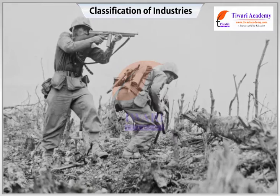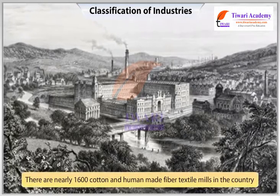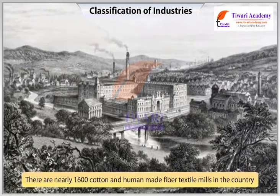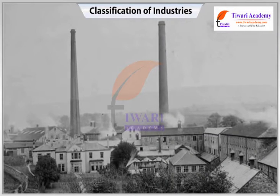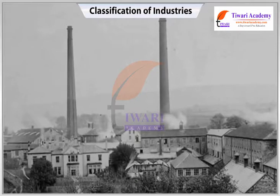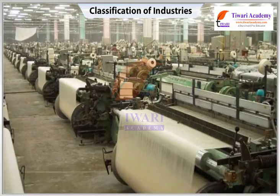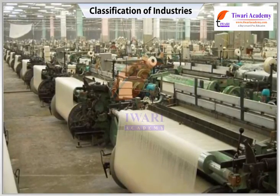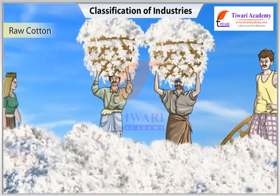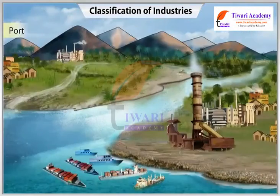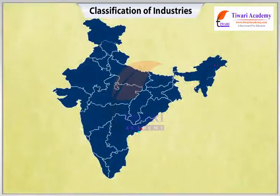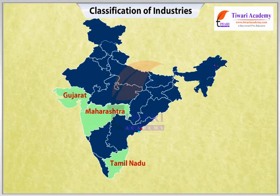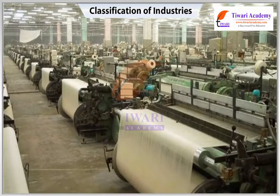Today there are nearly 1,600 cotton and human-made fiber textile mills in the country; about 80 percent of these are in the private sector and the rest in the public and cooperative sectors. Apart from these, there are several thousand small factories with four to ten looms. In the early years, the cotton textile industry was concentrated in the cotton growing belt of Maharashtra and Gujarat due to availability of raw cotton, market, transport access to ports, labor, and climate.